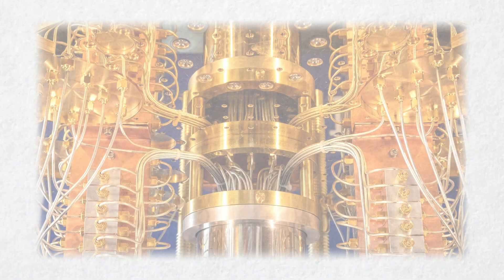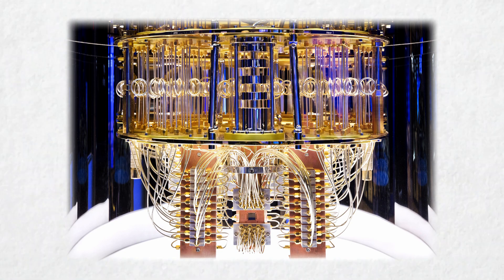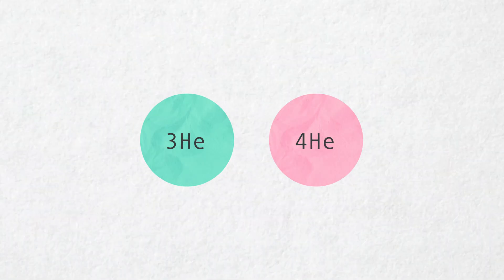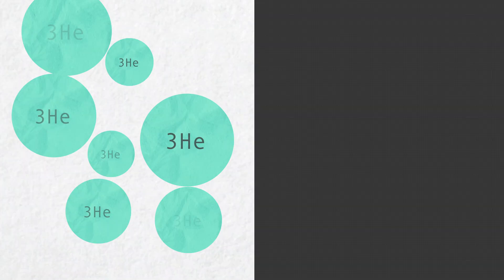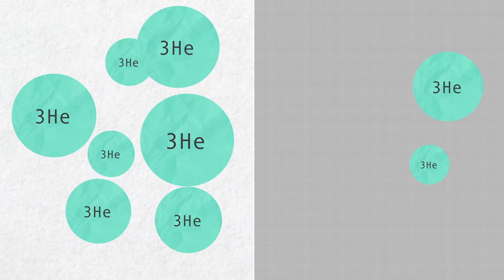But the real magic happens at the mixing chamber, deep down where temperatures plunge below 20 mK. Here, a specifically prepared mixture of helium-3 and helium-4 isotopes separate into two phases. When helium-3 atoms cross the interface from the concentrated layer into the dilute one, they soak up heat. This heat of mixing is the refrigerator's actual cooling engine.